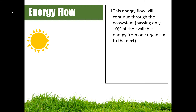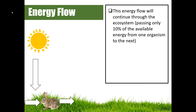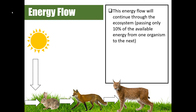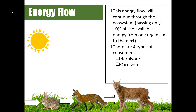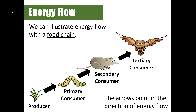This energy flow is going to continue through the ecosystem, passing only 10 percent of the available energy from one organism to the next. The sun provides light energy to producers, producers pass energy to primary consumers, who pass it to secondary consumers, who pass it to tertiary consumers, and so on. There are four types of consumers: herbivores that eat only plants, carnivores that eat only meat, omnivores that eat both plants and animals, and detrivores which are our decomposers.